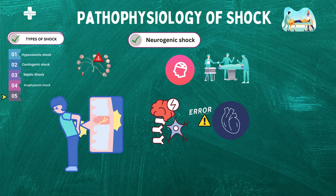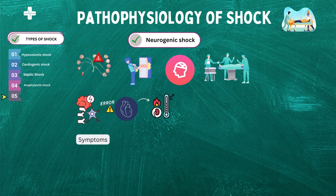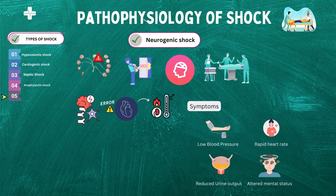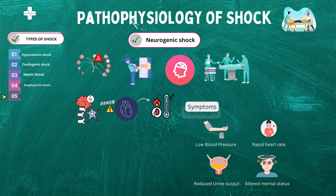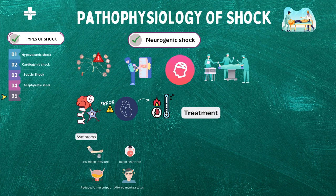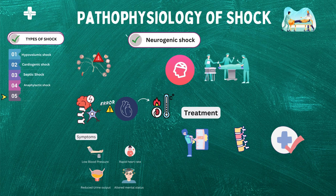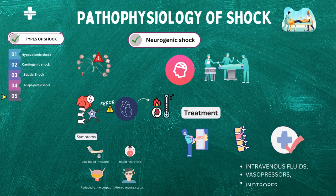The effects of neurogenic shock on the body can be severe. Reduced blood flow to the organs can cause organ failure and can be life-threatening if left untreated. Symptoms include low blood pressure, rapid heart rate, cold and clammy skin, and reduced urine output. Treatment depends on the underlying cause. In cases of spinal cord injury, the primary focus is on stabilizing the patient and preventing further damage to the spinal cord, which may involve immobilization and administration of medications to reduce inflammation and swelling. Patients with neurogenic shock may also require intravenous fluids, vasopressors, and inotropes to support blood pressure and organ function.